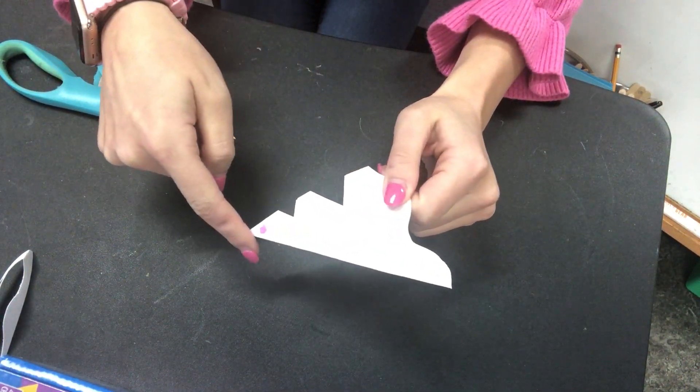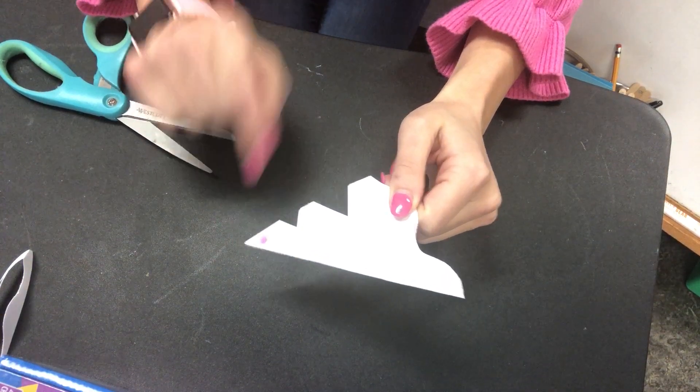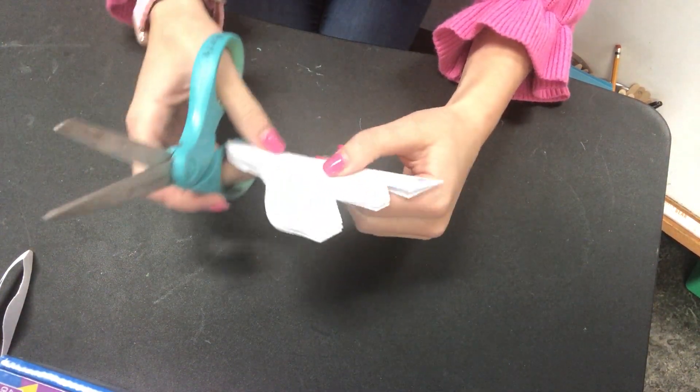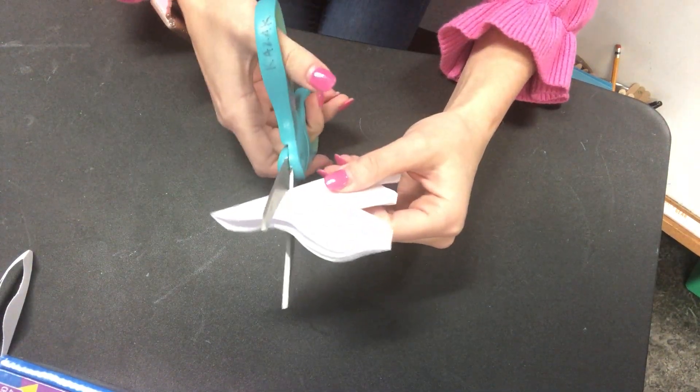I need to cut on this side now. Remember, I'm not going to cut where that little dot is. I'm going to cut a candy cane shape.